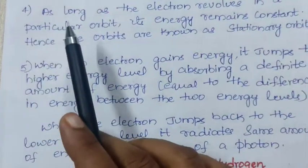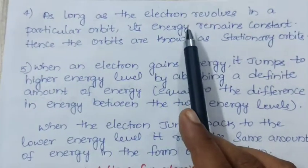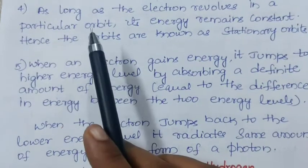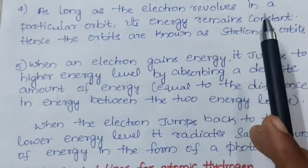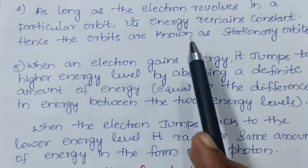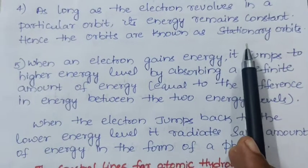Next point: as long as the electron revolves in a particular orbit, its energy remains constant. Hence, the orbits are known as stationary orbits.